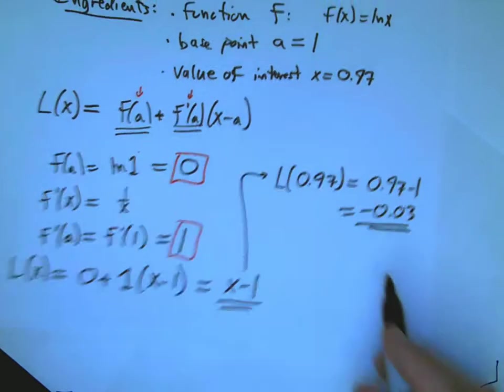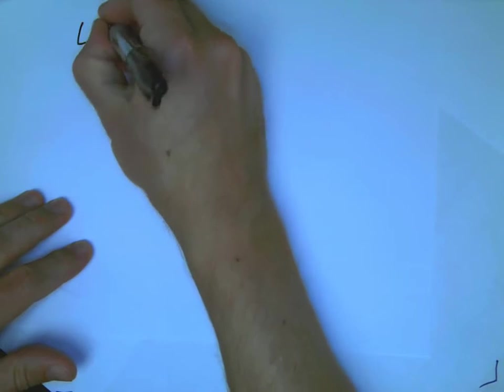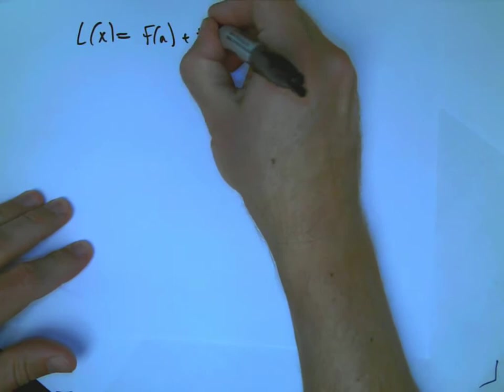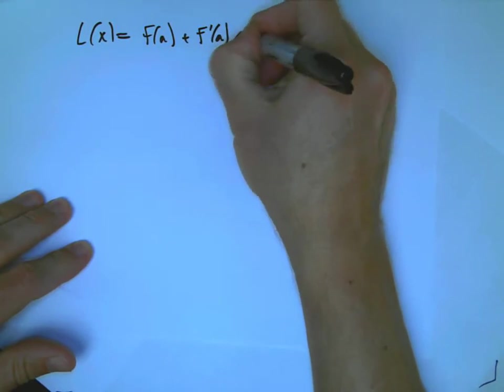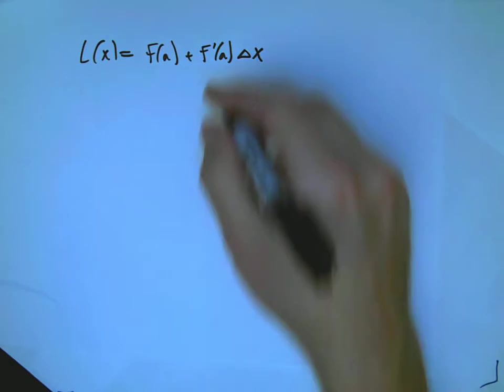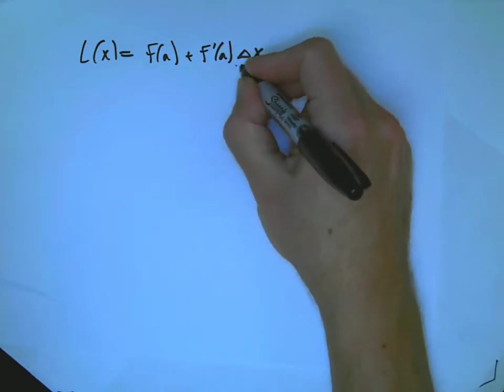That happens to be exactly the delta x value here. Let me go back and just rephrase this in a slightly different way, because that can be helpful. In general, L of x is f of a, plus f prime of a, times delta x.